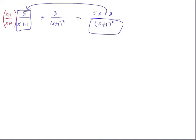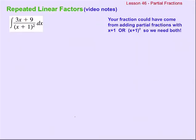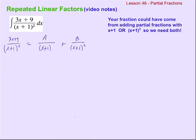So what that means, continuing with our partial fraction decomposition, is if we're trying to figure out where 3x plus nine over x plus one squared came from, we need to work backwards and account for the fact that it could have come from one fraction with x plus one in the denominator added to another fraction with x plus one squared. We need to account for both regular x plus one and also x plus one squared.